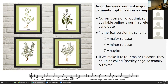Previous rounds of optimized results are also online, but we're encouraging use of this latest version. There's a numerical versioning scheme: X is the major release, Y is a minor release, and Z is a bug fix release. We're also giving these releases code names, and the reason we're calling the first one Parsley is that we're hoping to make four major releases - Parsley, Sage, Rosemary, and Thyme.